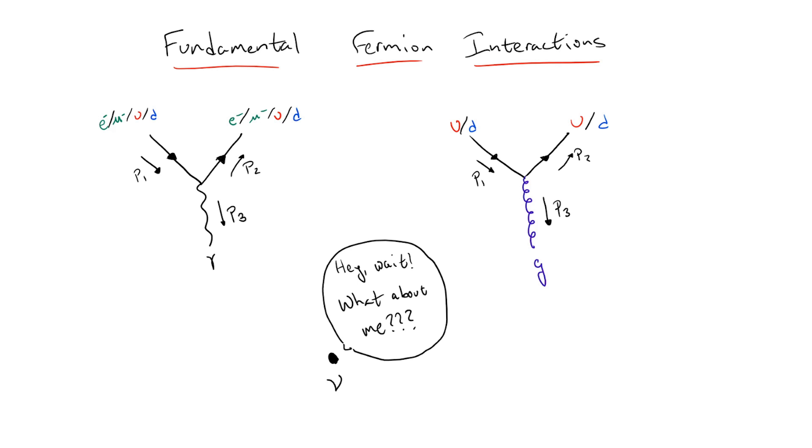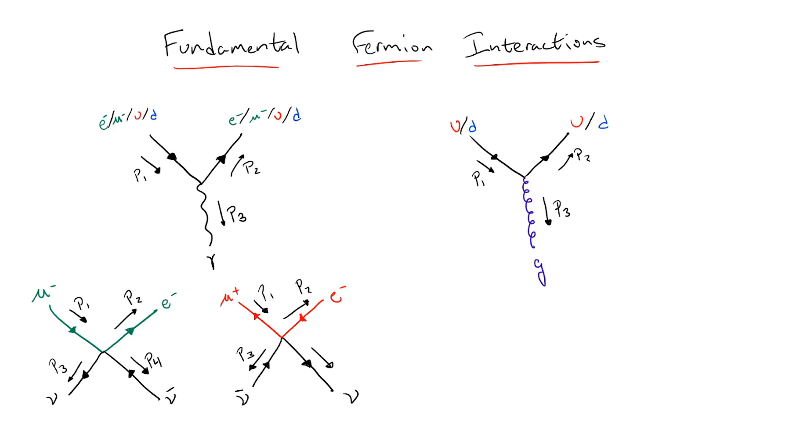The original way of including these decays is perhaps the most obvious. Just include new vertices into the Feynman diagram expansion whose external particles correspond to those participating in the decay. From the information we have, this amounts to four total new interactions, one for each type of decay.